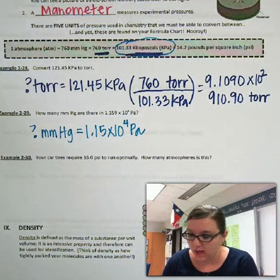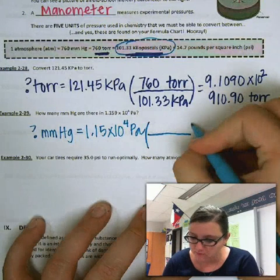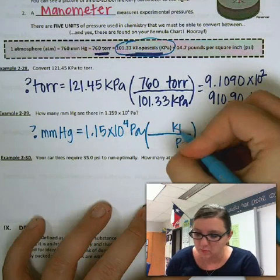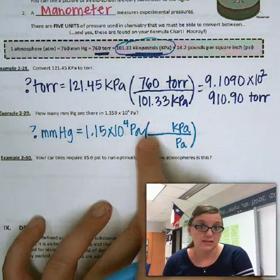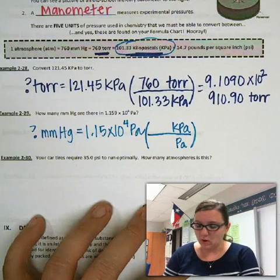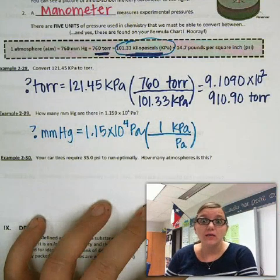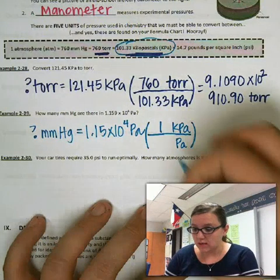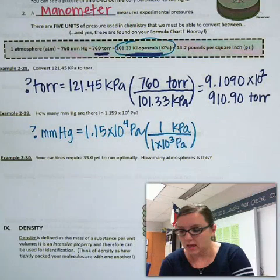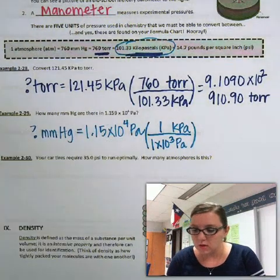What we need to do first is a metric conversion. We're going to put pascals on the bottom and kPa on top so that the pascals cancel out. 1 goes with the prefix, so I put 1 with kilo, and kilo's scientific notation equivalent is 1 × 10³. So now I have it in kilopascals, and I can use kilopascals to get into millimeters of mercury.